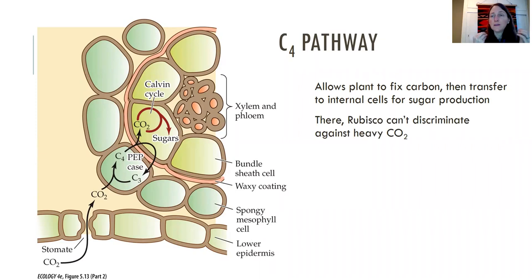It allows plants to fix carbon then transfer it to an internal cell for sugar production. There, once that carbon has already entered, the rubisco just has to deal with it. It doesn't like to, but it can't be choosy because it's all it has, and so the rubisco can't discriminate against the heavy CO2. So C4 plants are going to take up more of the heavy CO2 than C3 plants.